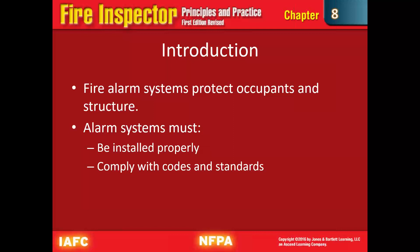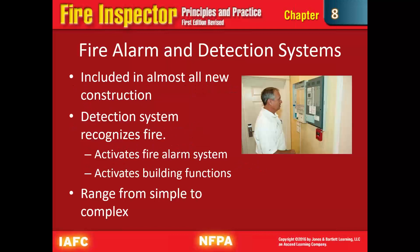Fire alarm systems must comply with the codes and standards for the jurisdiction and are included in almost all new construction, provided that they're required. The codes for each occupancy class lay out what occupancies require a fire alarm system based on occupancy load and type of operation. The detection system recognizes fire, activates the fire alarm, and can trigger various building functions — such as smoke doors, dampers, and HVAC systems — shutting off HVAC fans so they're not circulating and pushing smoke. Systems can range from very simple to very complex.